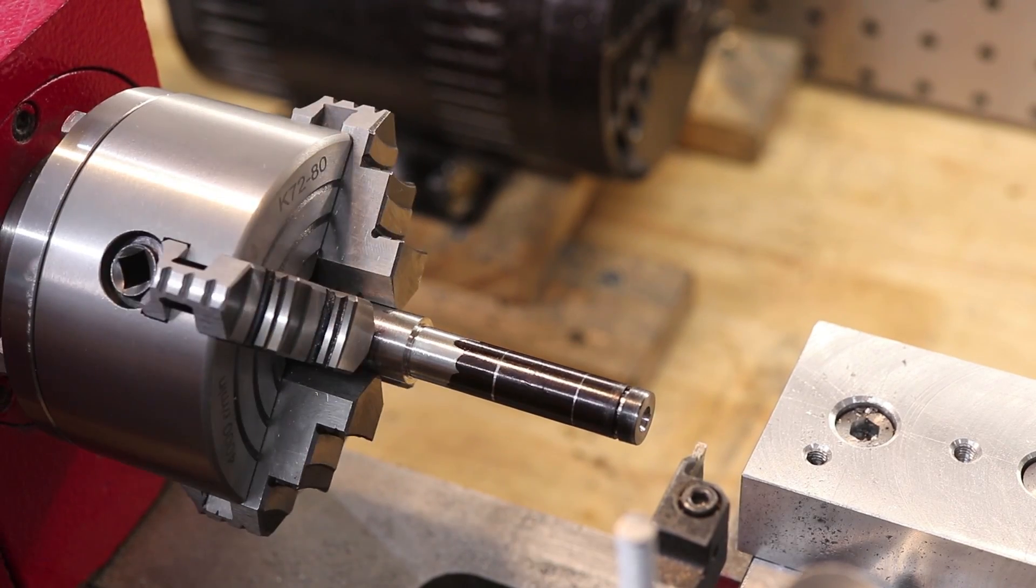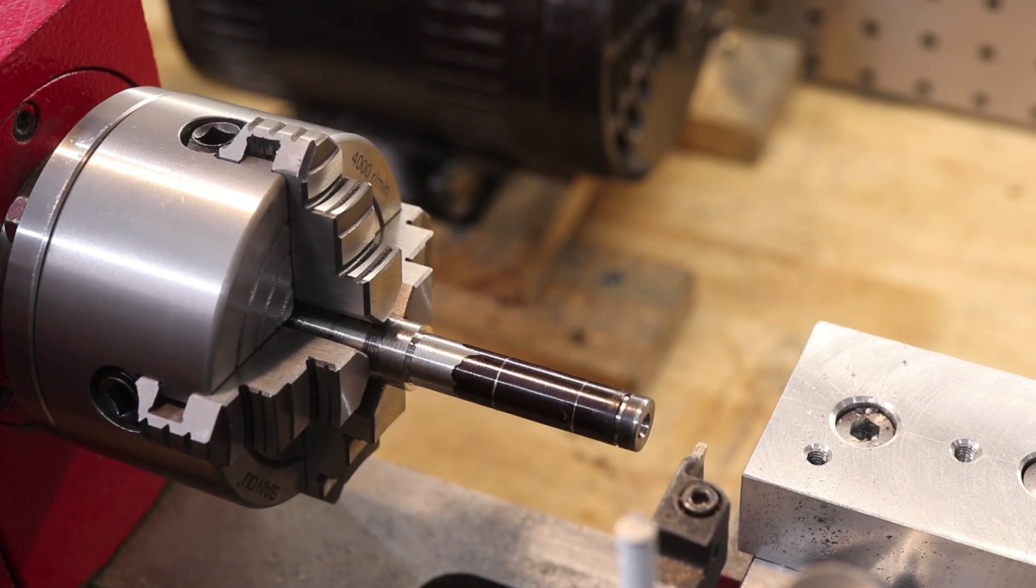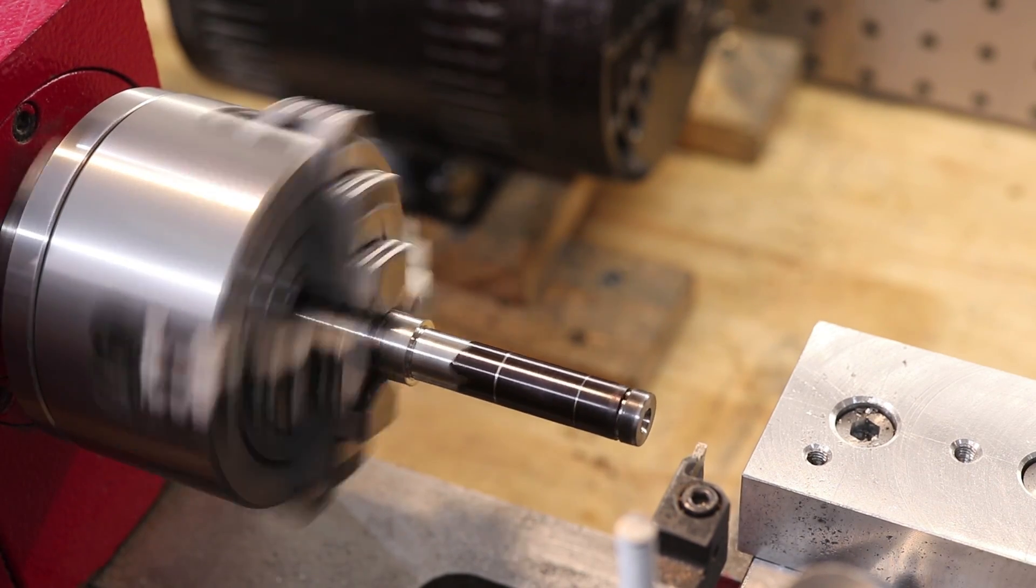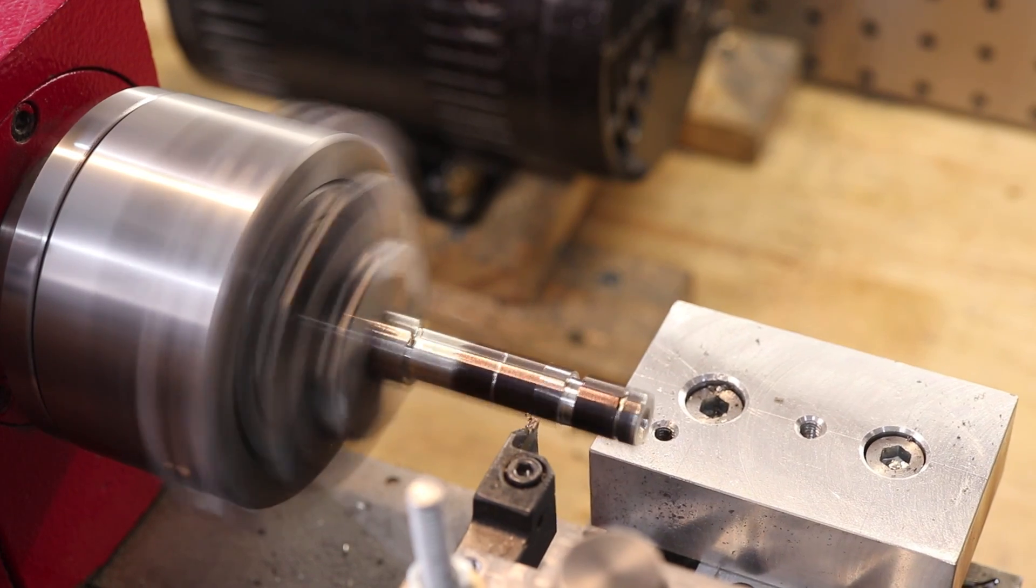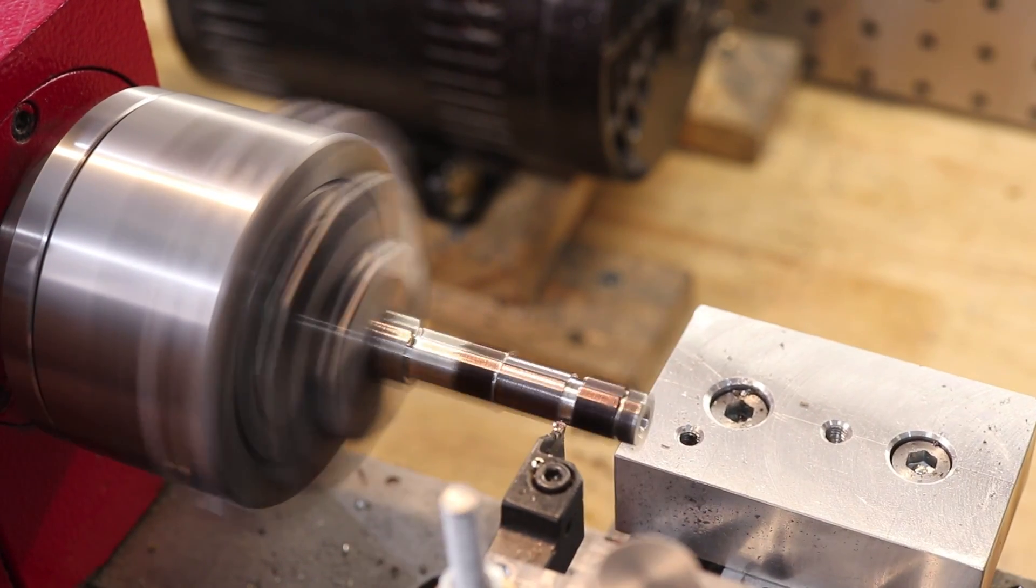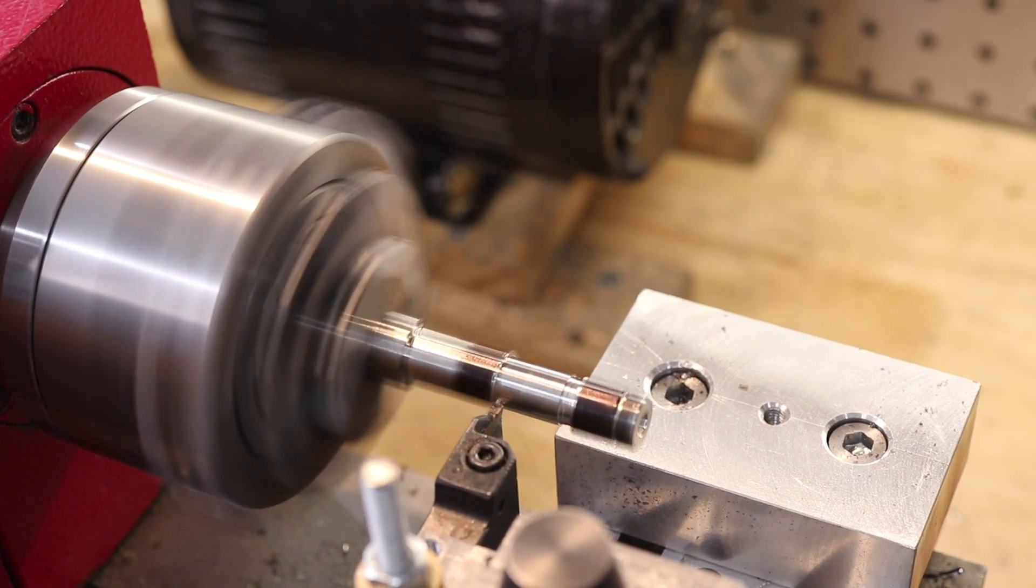To make the eccentric portion of the rod I switched over to the independent 4 jaw chuck and I dialed in 2mm of offset. There's a little more stick out than I'd like and I can't remachine the centre but the deflection was pretty minimal and the part turned out really great.